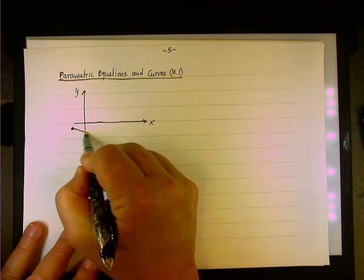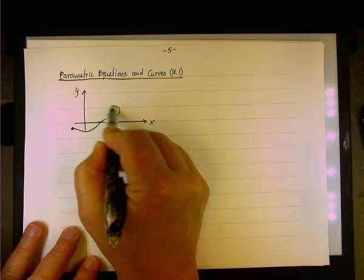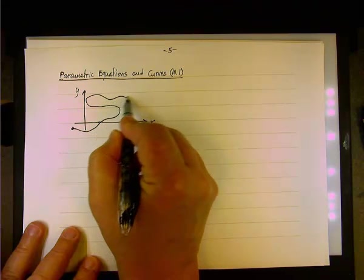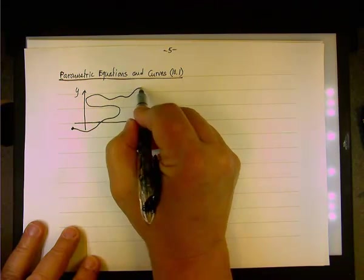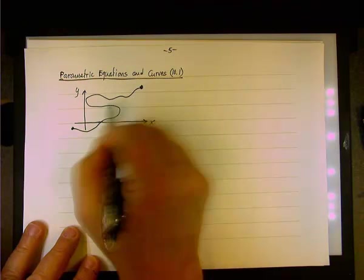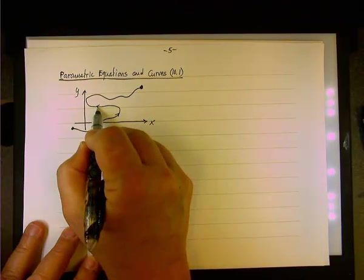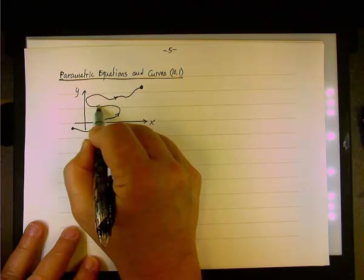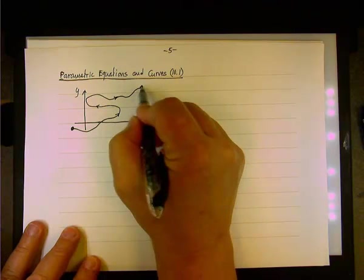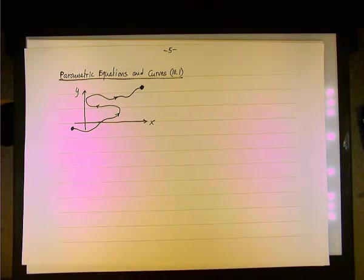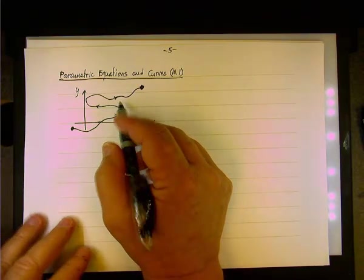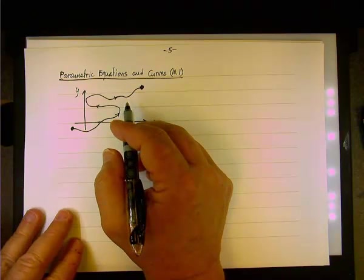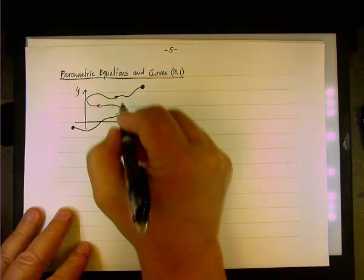And now this particle starts traveling somewhere and then it curves along like so and ends up being here. So the particle is traveling along this path, where this is the initial point and this is the final point. Now, each point along this path can be determined by the coordinate x, y.